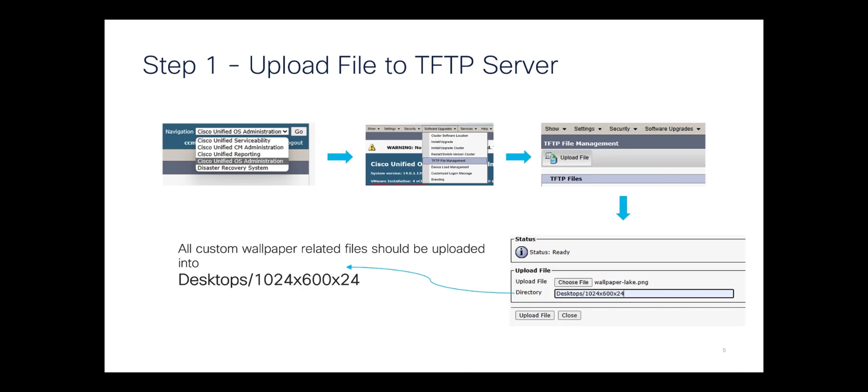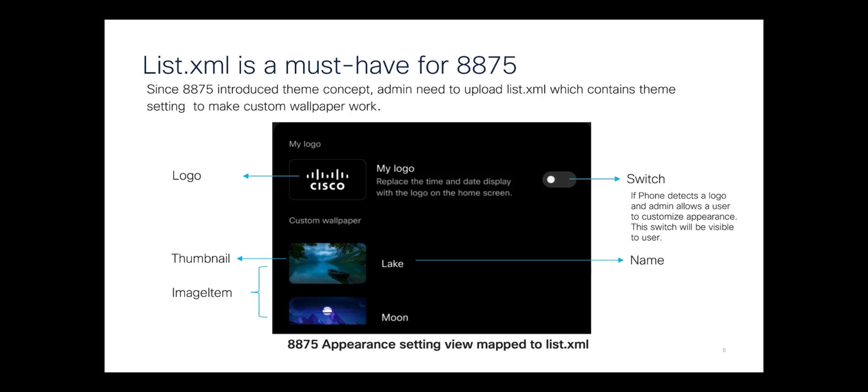Step one is to upload our PNG files into this directory as well as the list.xml that we'll talk about in just a second. Again, list.xml is required for custom wallpapers. If you want to use the logo, you can optionally specify that in the list.xml and then it will be pushed automatically to the desktop.